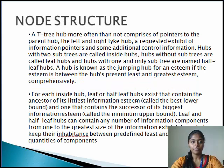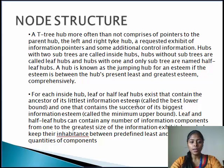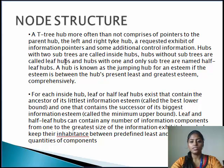The node structure: a T-tree node typically comprises pointers to the parent node, the left and the right child nodes, an ordered array of data pointers, and some additional control information. Nodes with two sub-trees are called internal nodes, nodes without sub-trees are called leaf nodes, and nodes with one and only one sub-tree are named half-leaf nodes. A node is known as a bounding node for a value if the value is between the node's minimum and maximum value.